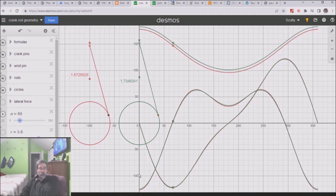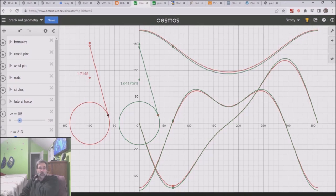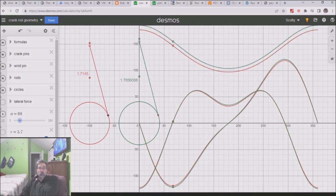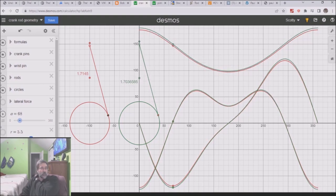Let's go ahead and play with our rod ratios with that long stroke. Make it short, make the rod shorter. Not a huge difference. Make the rod longer. Not a huge difference.